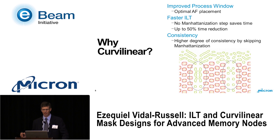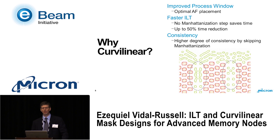Third, we have higher consistency of the solution. Small perturbations in the ILT field after the Manhattanization step can result in large differences in the mask. You can see one example here where you end up with two quite different solutions just by trying to enforce MRC compliance and Manhattanization, illustrating why unconstrained curvilinear solutions are more stable.